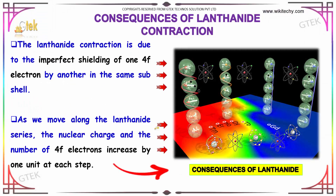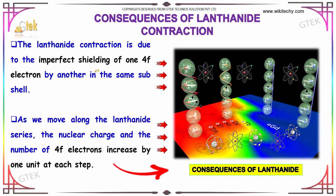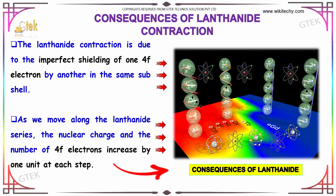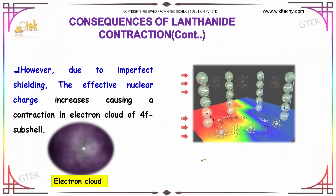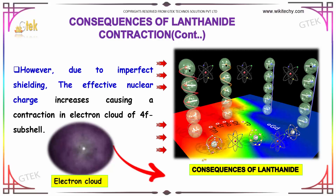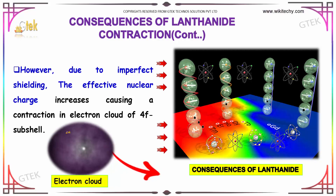The lanthanide contraction is due to the imperfect shielding of one 4F electron by another in the same subshell. As we move along the lanthanide series, the nuclear charge and the number of 4F electrons increase by one unit at each step. However, due to imperfect shielding, the effective nuclear charge increases, causing a contraction in the electron cloud of the 4F subshell.